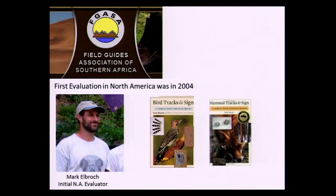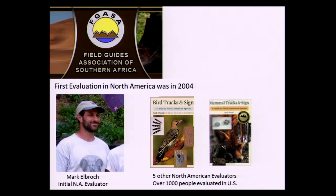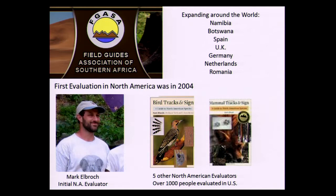The first evaluation in North America was in 2004. Since then, there are now five other evaluators, myself included. Over about 1,000 people have been evaluated in the U.S., with about 200 evaluations conducted at this point. Many people who come repeat the evaluations multiple times, so that 1,000 number represents new people evaluated. It's an international standard that is expanding around the world — Spain, UK, Germany, Netherlands, and many other countries are adopting this standard for evaluating trackers and field researchers.